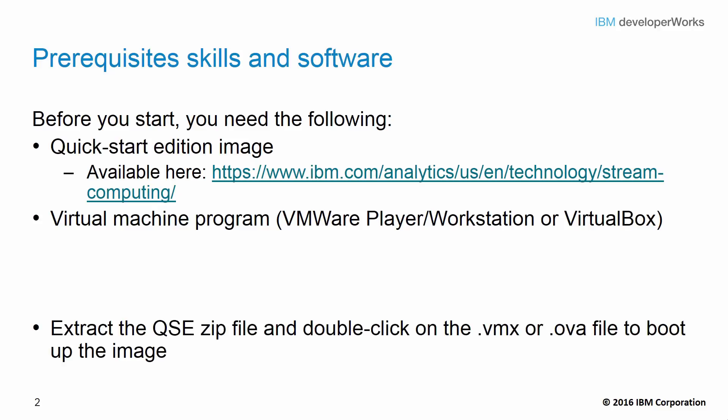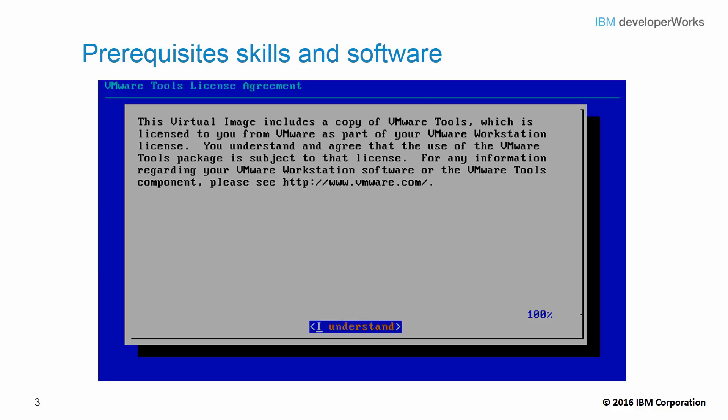After you download the Quick Start Edition image and install your virtualization program, extract the zip file of your Quick Start Edition to any location on your computer. Simply double-click on the VMX file if you're using VMware, or the OVA file if you're using VirtualBox to boot up the image. On startup, you'll have to agree to some licenses — press Tab and Enter to scroll through and accept them.